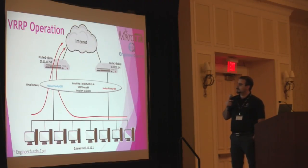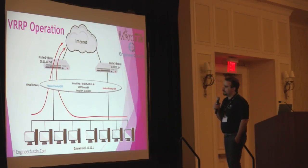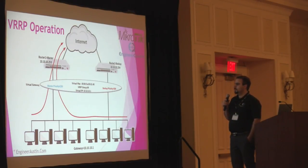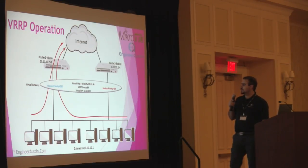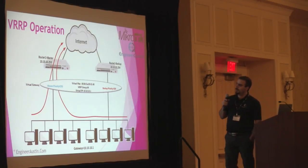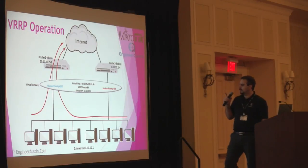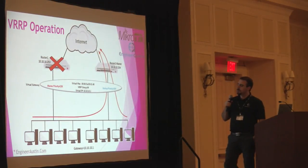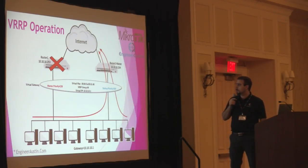Here's what VRRP operation looks like in practice. Router one has a higher priority than router two, so it takes the master role, and the backup router with priority 200 is the backup. Packets go through router one to reach the internet. You can see the virtual MAC, VRRP group, and virtual IP — the virtual IP is set as the gateway for all clients. If we lose router one, router two takes over the master role, and every client that was going to the internet through router one now goes through router two.